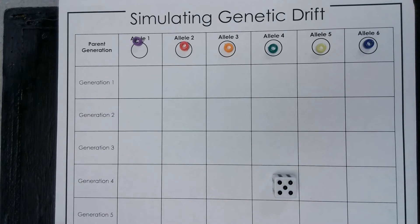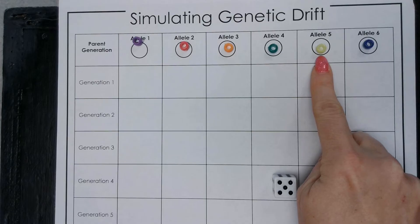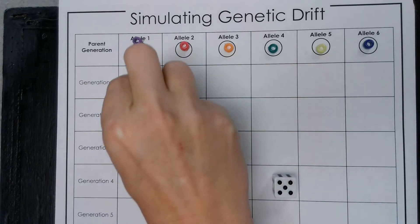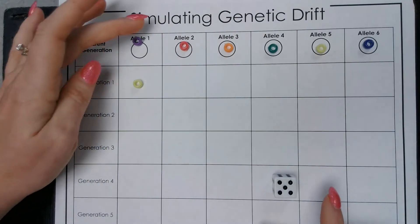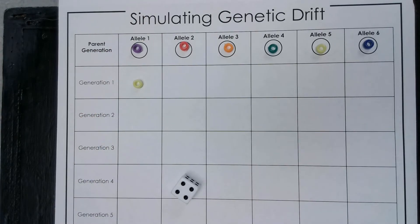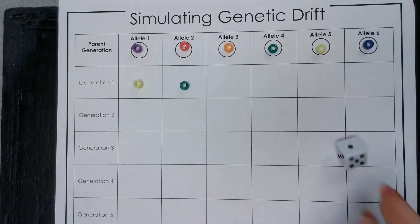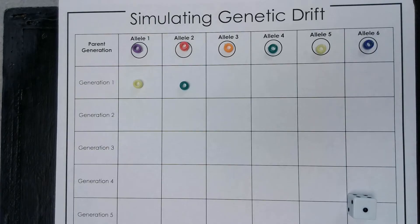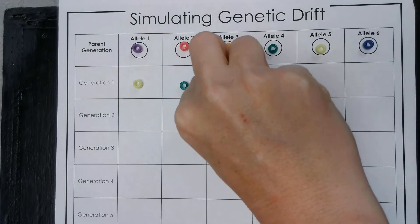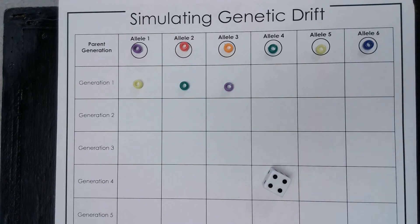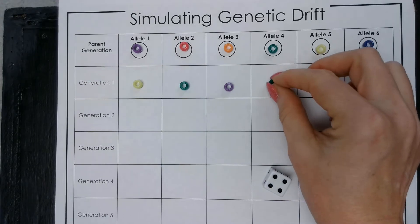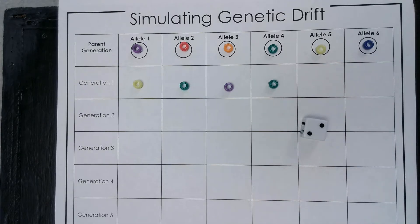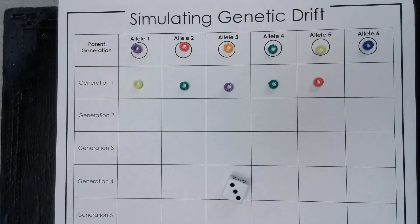I'm going to roll the dice. We get a five, so I'm going to reproduce the yellow bead — that's offspring number one in the first generation. We're going to get a four, so we've got a green. We've got a one, so I'm going to reproduce the purple bead. Another four — that's another green bead. And then a two — that's a pink bead. One more time, a three — that's an orange bead.